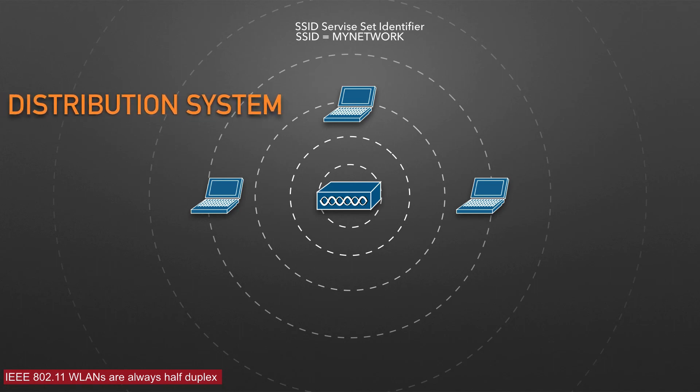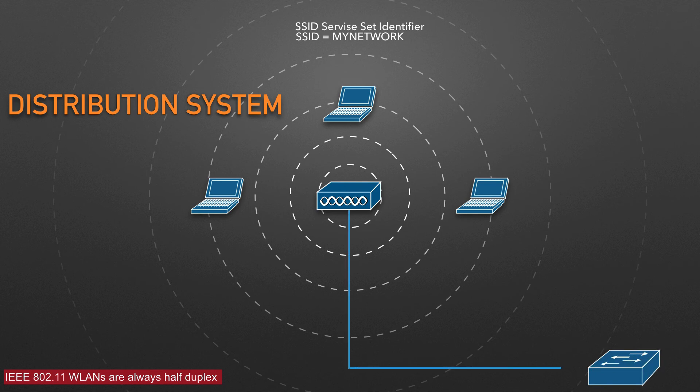Notice that a BSS involves a single AP and no explicit connection into a regular Ethernet network. Sooner or later, wireless clients will need to communicate with other devices that are not members of the BSS. Fortunately, an AP can also uplink into an Ethernet network because it has both wireless and wired capabilities. The 802.11 standard refers to the upstream wired Ethernet as the distribution system, or DS, for the wireless BSS.